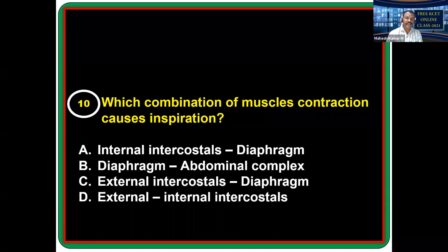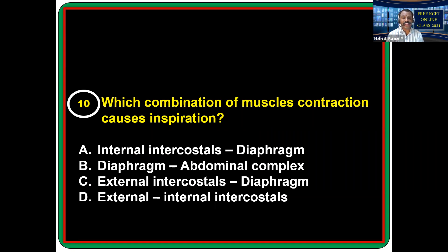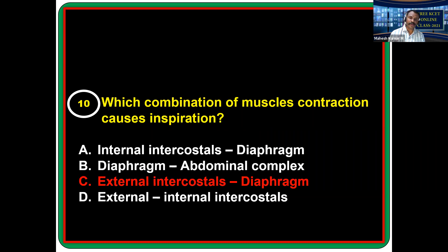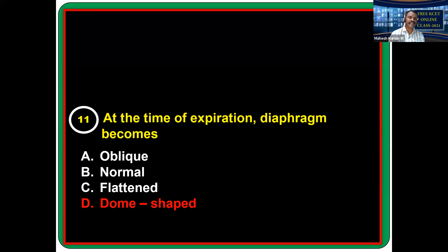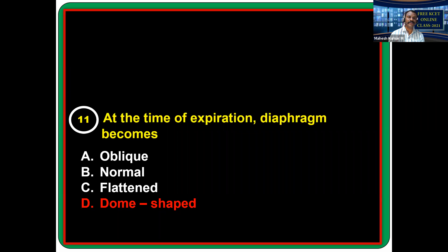Which combination of muscle contraction causes inspiration? As already explained, it is the external intercostal muscles and the diaphragm. At the time of expiration, the diaphragm becomes dome-shaped.